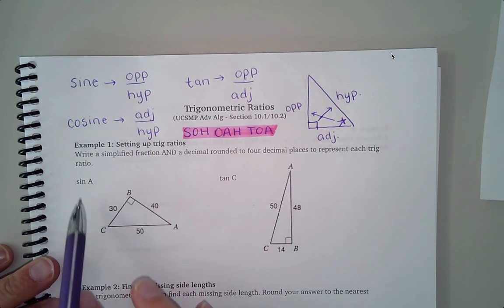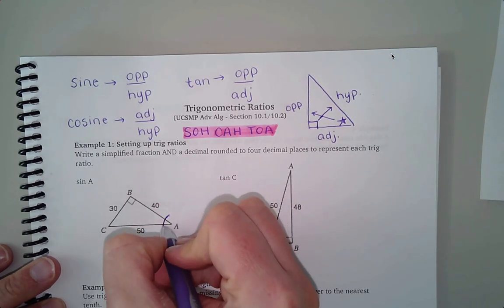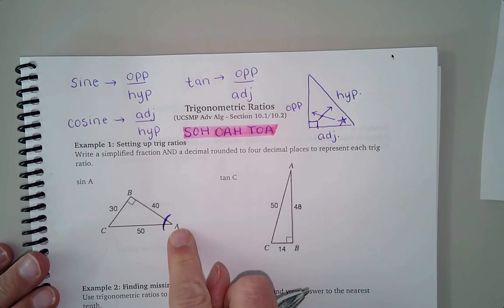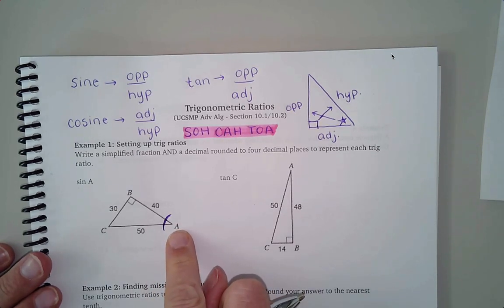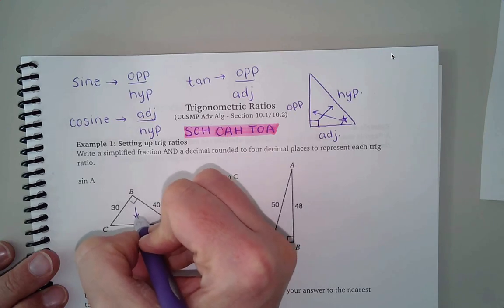Okay, so when I say sine a, here's my angle a that I want to be looking at and I'm just going to label the sides based on that angle a. So the first one I always look for is the hypotenuse that's across from the right angle.